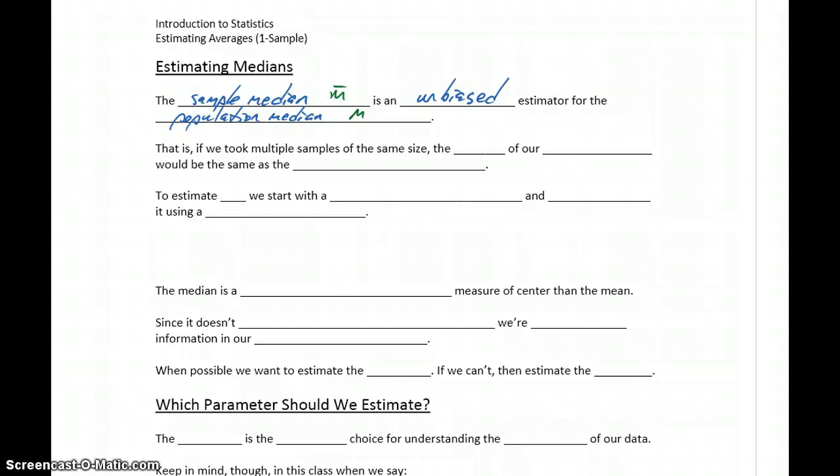So the sample median is an unbiased estimator for the population median. This means if we took multiple samples of the same size, the mean of all of our sample medians would be the same as our actual population median. That idea that if we went out and repeated a study over and over again, each time collecting different randomly selected data, the average or the mean of all of those different sample medians would give us the true population median.